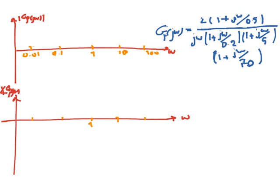The phase for this system will start at −π/2 and at the end we will have −270 degrees, going through −π and −3π/2. These can be considered as asymptotes. Regarding amplitude, since we have one pole at the origin, the amplitude starts with a −20 dB/decade slope.